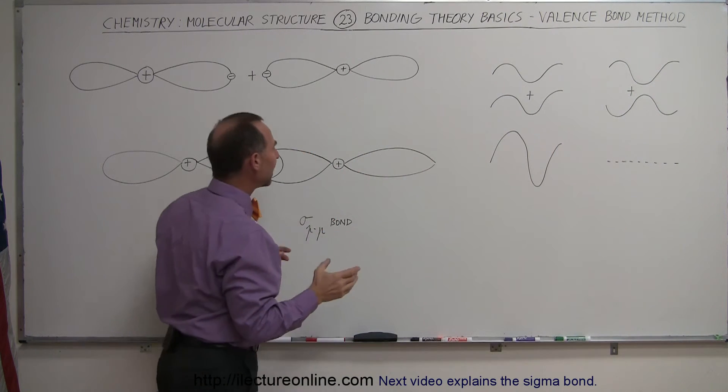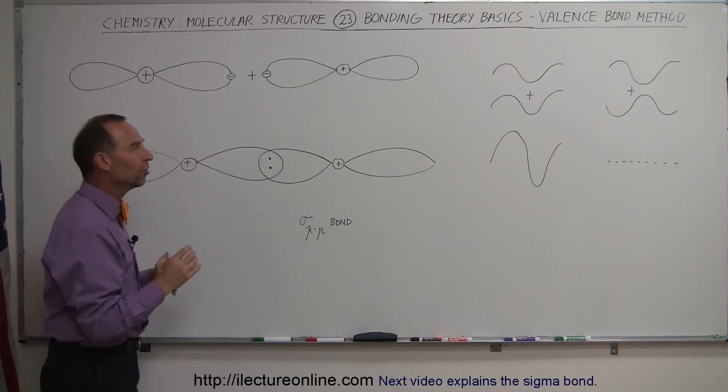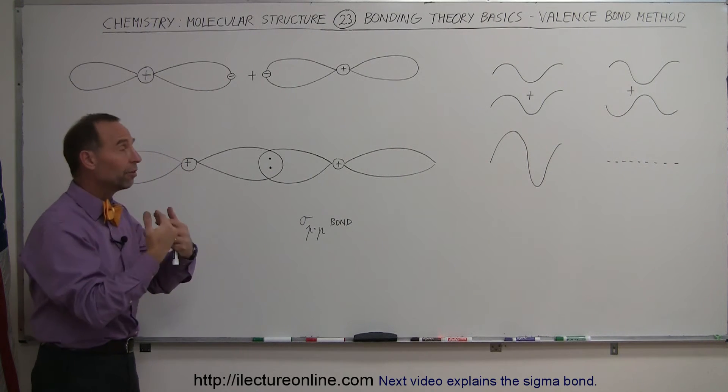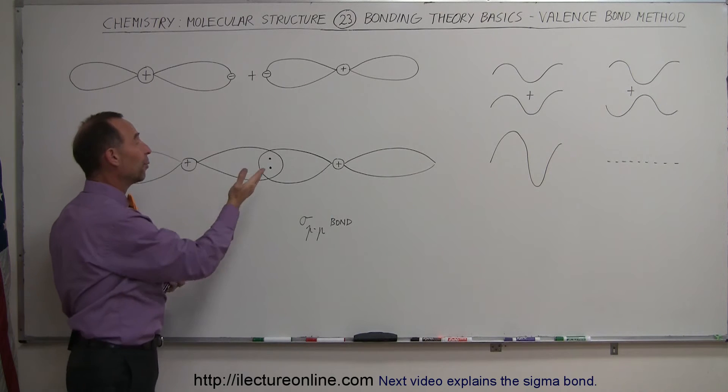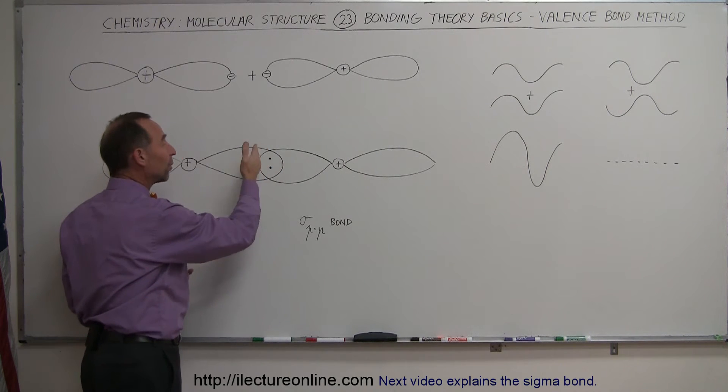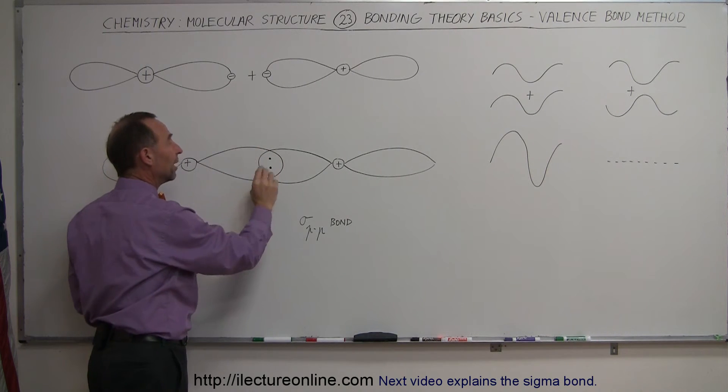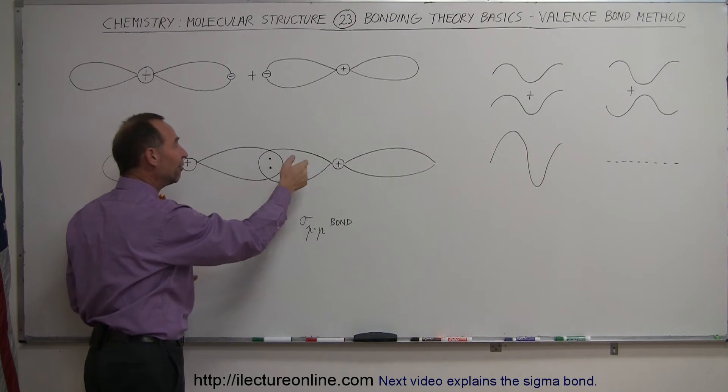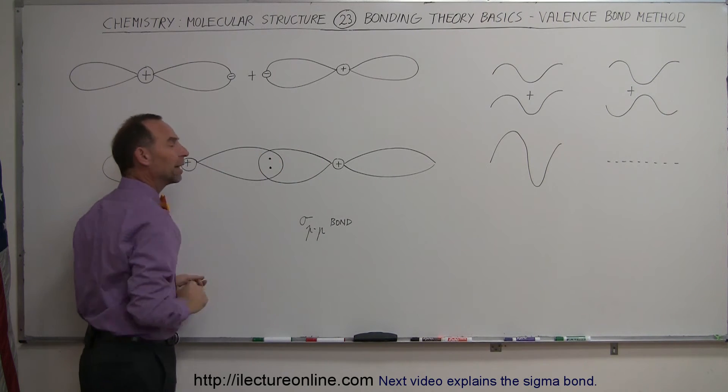So the only way that electrons can reside within the same region is if those two electrons then move in such a way that they're in phase and when they do that, they form this region right here where they can reside together as a pair in phase, exist and form that electronegative region.